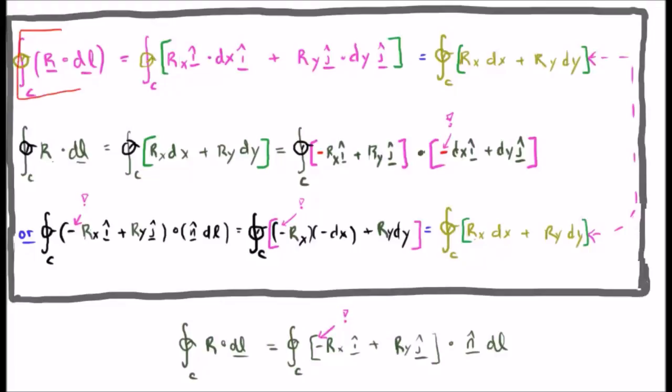If the closed line integral of r·dl, that's equivalent to the closed line integral of minus r sub x i-hat plus r sub y j-hat dotted with n-hat dl.